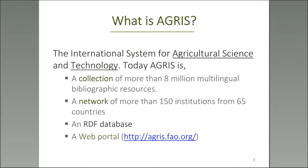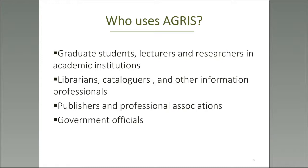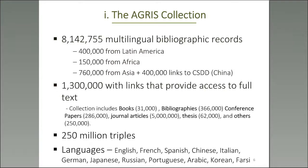Who uses AGRIS? AGRIS is used by graduate students, lecturers, and researchers in academic institutions. It is also used by librarians, catalogers, and other information professionals, by publishers and professional associations, and government officials also consult AGRIS. In some cases AGRIS becomes the oldest or most visible repository of a collection in an institution, because these records have been captured over time. Many have considered AGRIS as an abstracting or indexing service that can point you to where resources are.